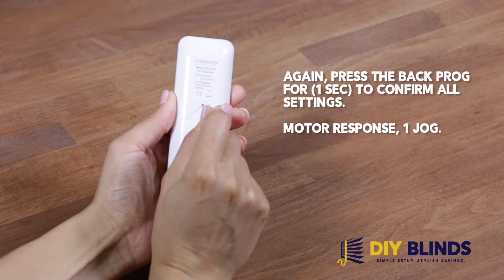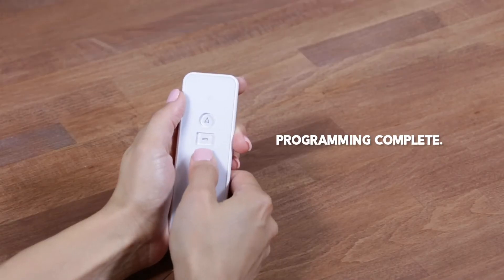Again, press the back prog button for 1 second to confirm all settings. Motor responds with 1 jog. Programming complete.